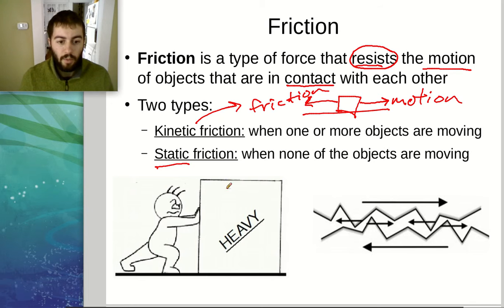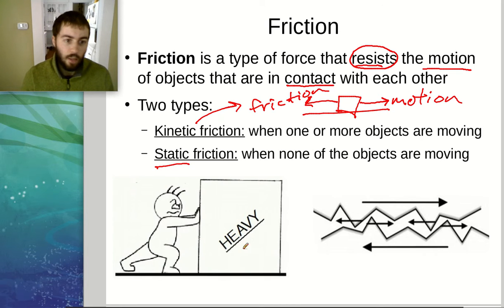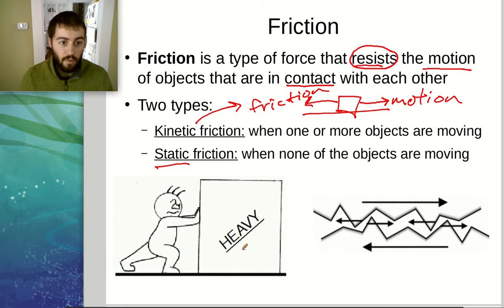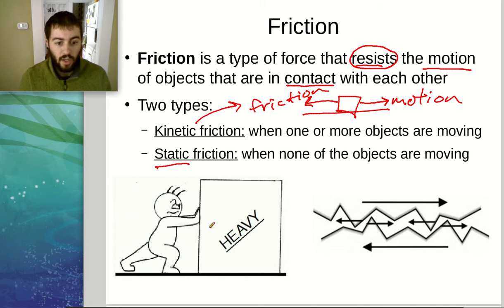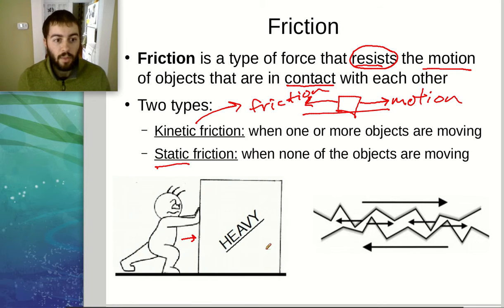So either static or kinetic friction — they're both types of friction, just different in terms of when they occur. If objects are moving, there's going to be kinetic friction. If the objects are stationary, there's going to be static friction. Looking at this guy pushing a box across the floor: if the box were moving, it would be kinetic friction; if he's pushing hard and the box is standing still, that would be an example of static friction.